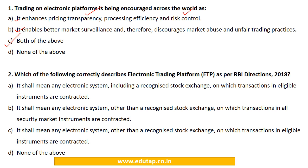MCQ 2: Which of the following correctly describes the electronic trading platform as per the RBI Directions 2018? (a) any electronic system including a recognized stock exchange on which transactions in eligible instruments are contracted; (b) any electronic system other than a recognized stock exchange on which transactions in all securities market instruments are contracted; (c) any electronic system other than a recognized stock exchange on which transactions in eligible instruments are contracted; (d) none of the above. The answer is option C — a platform other than a recognized stock exchange on which eligible instruments are contracted.